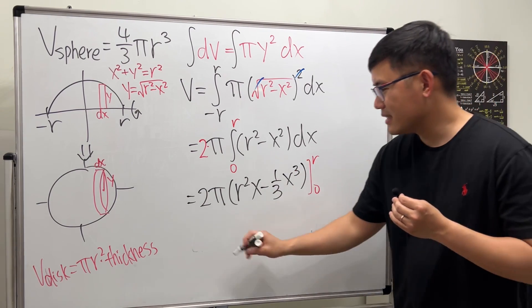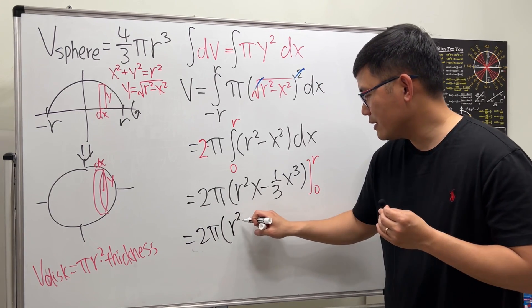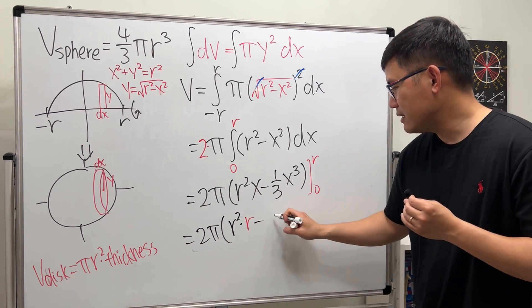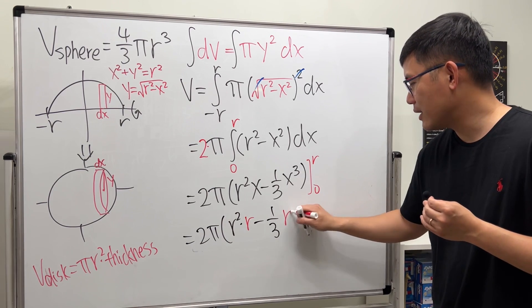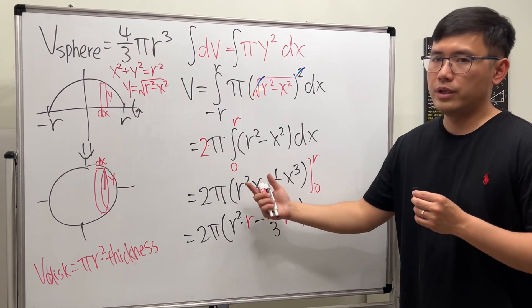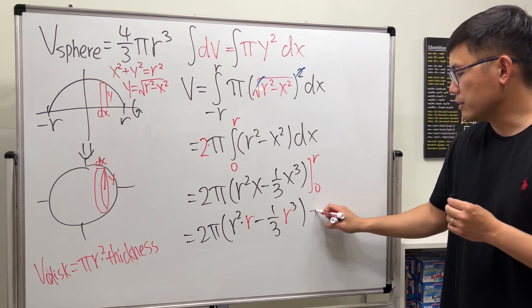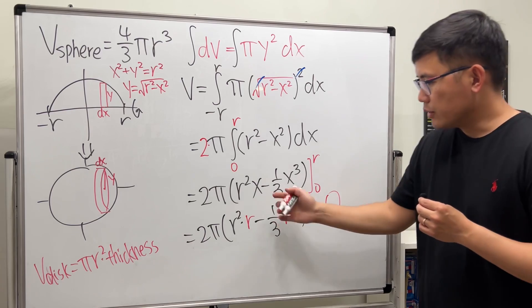And then, we go from 0 to r. Plug in r first. So, we get 2π times r² times r minus 1/3 times r³. And then, if we plug in 0 into here, we get 0. Likewise, plug in 0 into here, we get 0. So, the whole thing is just minus 0.